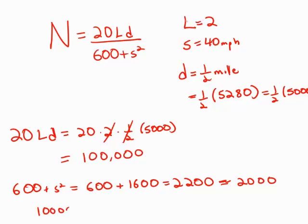numerator 100,000 over denominator 2,000. Cancel out a bunch of zeros. This is just 100 divided by 2, which is 50. And by far the closest answer choice to this is 48, which is answer choice D.